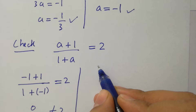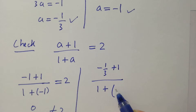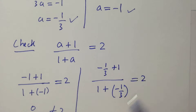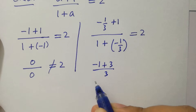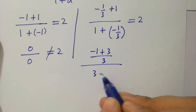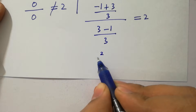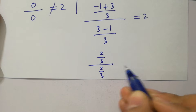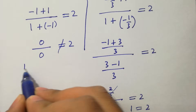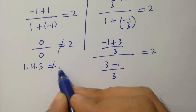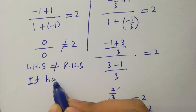Now put a = -1/3: we get (-1/3 + 1)/(1 + (-1/3)) = ((-1+3)/3)/((3-1)/3) = (2/3)/(2/3). Simplifying this, we get 1 = 2, which means the left hand side does not equal the right hand side. This shows that this problem has no real solution.